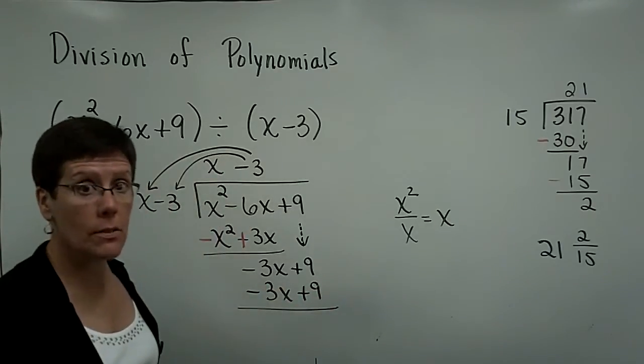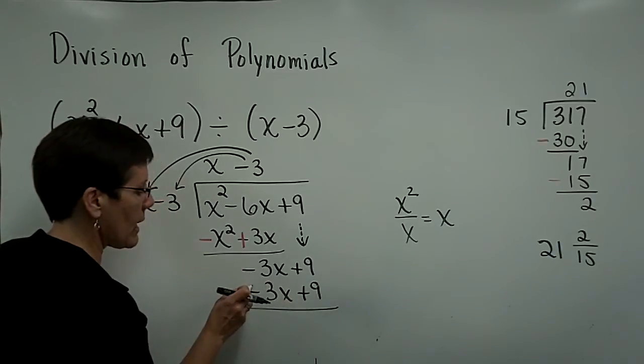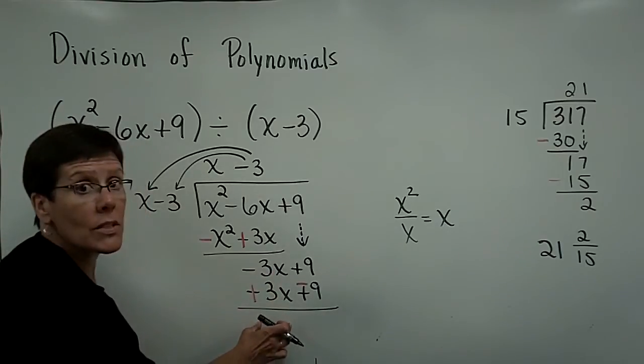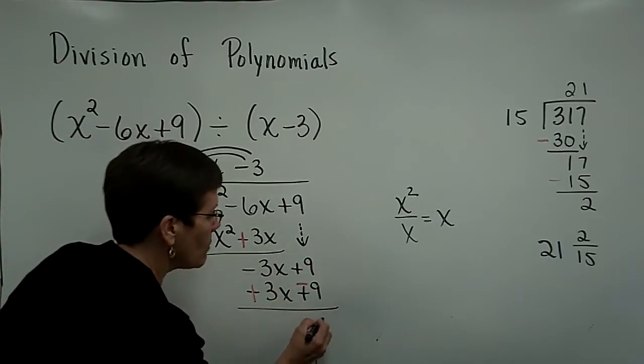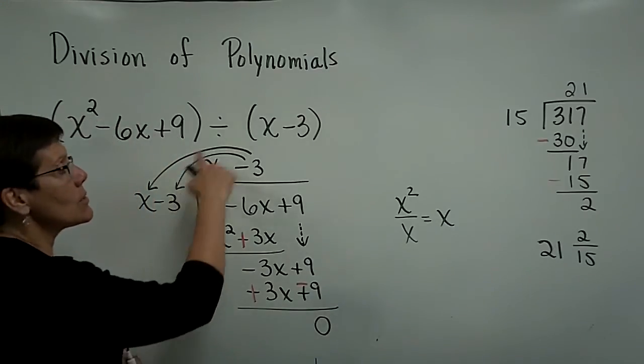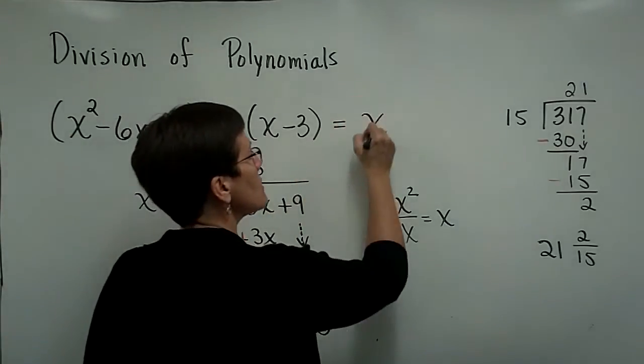And now you're ready to subtract that from the above. So when I subtract this, I add the opposite and the opposite here. Those always will combine to be 0. In this case, they combine to be 0. So my remainder is 0 in this problem. And my answer is just this x minus 3. So the solution to this problem is x minus 3.